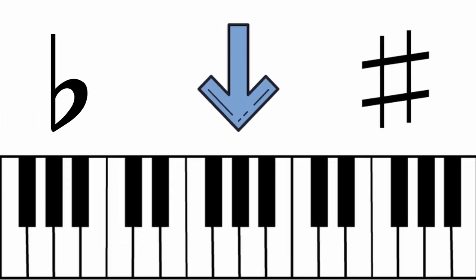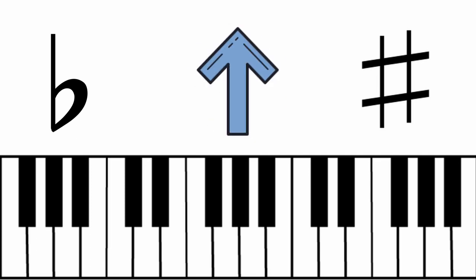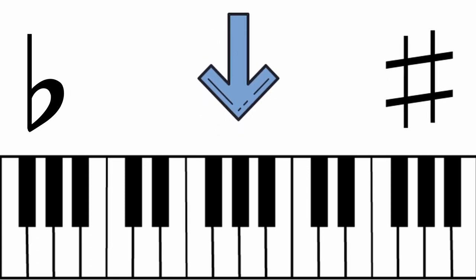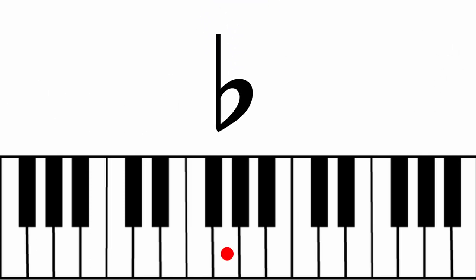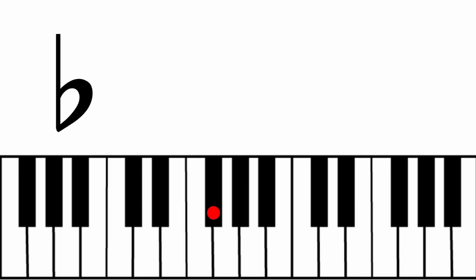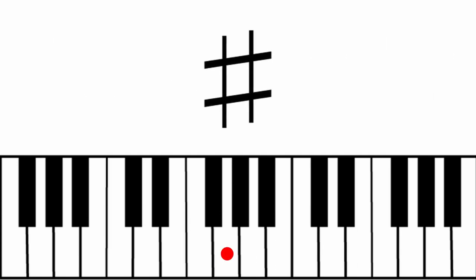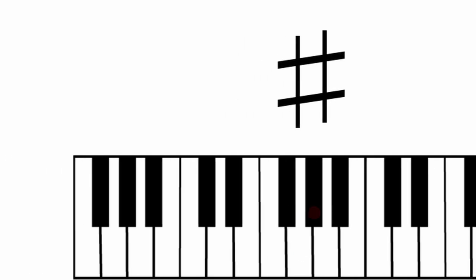There are other things called accidentals. Accidentals tell the musician to play the note directly above or below the note with the accidental. This accidental is a flat — it means to play the closest note down. This accidental is a sharp — it means to play the closest note up. These are just some of the symbols, which could still give a pretty good understanding of music.